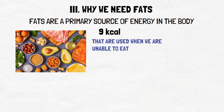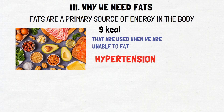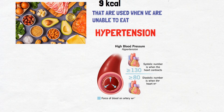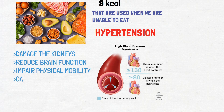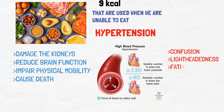One of the major dangers of a high fat diet is hypertension. Hypertension is when the blood pressure is above the normal range. Consuming too much fat can cause the arteries to narrow and become less elastic, which in turn can increase blood pressure. It can also damage the kidneys, reduce brain function, impair physical mobility, and cause death. Symptoms of hypertension and low blood pressure include confusion, lightheadedness, fatigue, and shortness of breath, among many others.